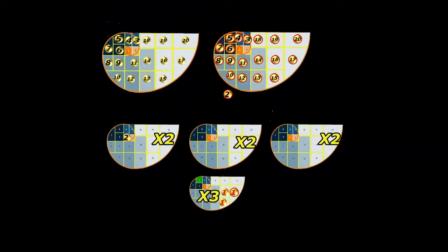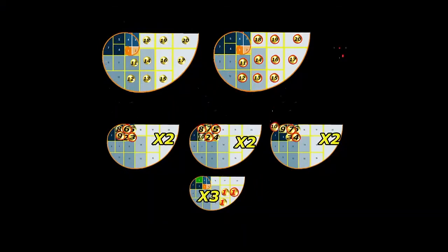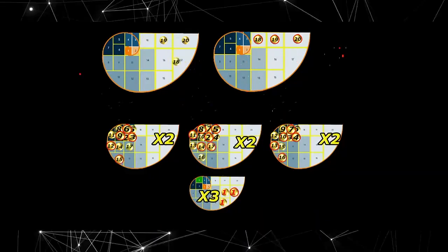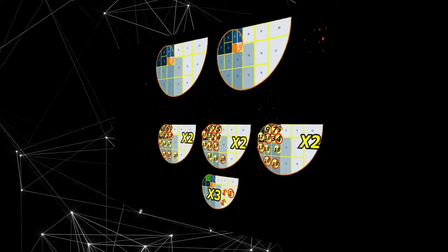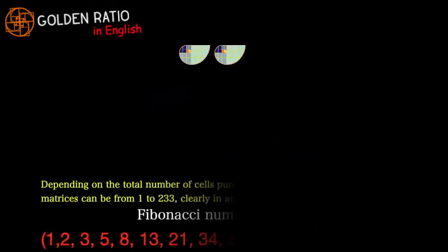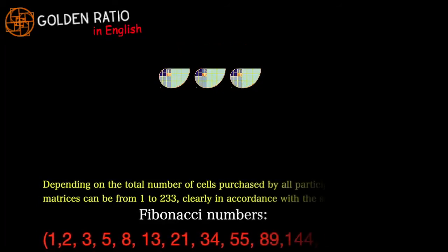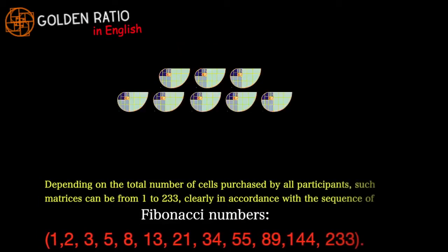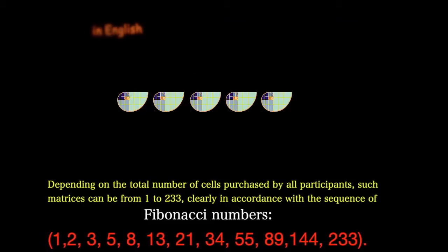In the same principle, the cells located at the first places on matrix X2 move to matrix X3. The rest of them consistently occupy places in between three matrices. Depending on the total number of cells purchased by all participants, such matrices can be divided from 3 to 5, from 5 to 8, then to 13, 21, and up to 233 equal matrices, all of them clearly in accordance with the sequence of Fibonacci numbers (1, 2, 3, 5, 8, 13, 21, 34...).